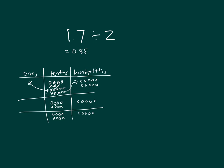So our answer is 0.85. Let's show our written method as well. 2 can't go into 1. 2 can go into 17, eight whole times, because 8 times 2 is 16. 17 minus 16 is 1.